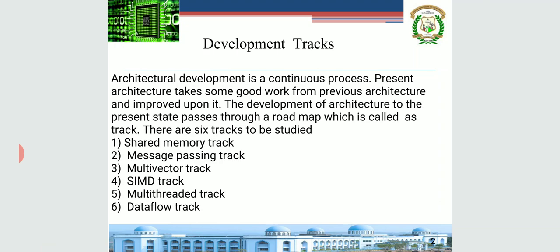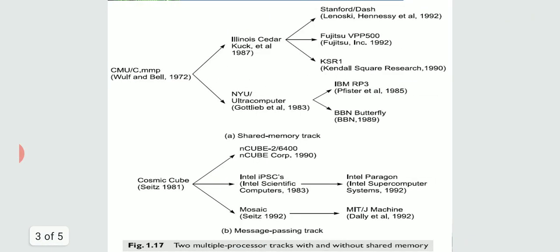Generally there will be six tracks for discussion: shared memory track, message passing track, multi-vector track, single instruction multiple data track, multi-threaded track, and data flow track. These six tracks we will be studying. Later chapters are developed upon these six tracks. Today's session gives you an introduction of all these tracks. Let us see the first — shared memory track and unshared memory track.